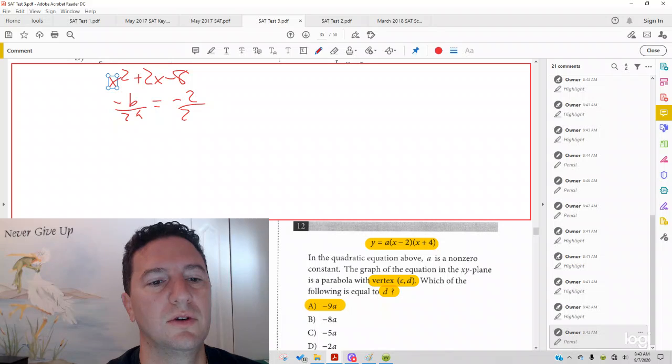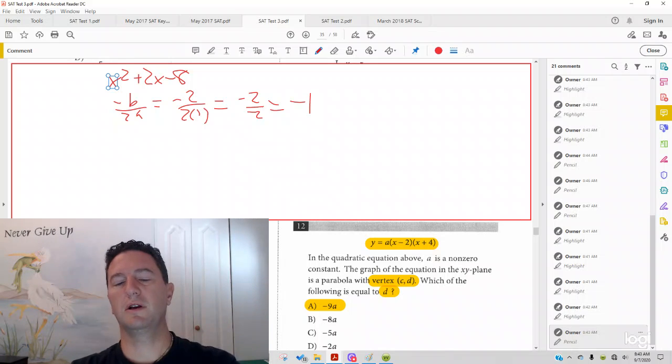It's 2. So it's negative 2 over 2. What's your a? It's 1. So you get negative 2 over 2, which will give you negative 1. And that's another way you can do it. Plug it in, and then you get your y part of the vertex.